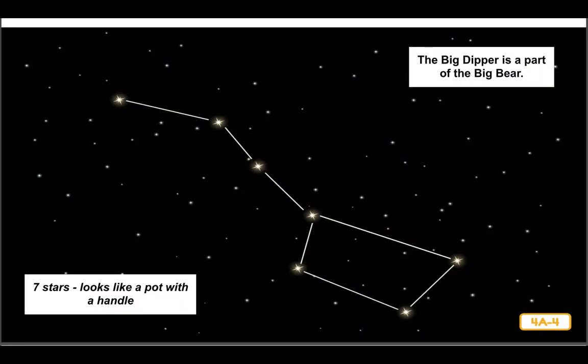One of the first groups of stars that young stargazers in the United States learn about is also the easiest one to spot. The Big Dipper looks like a giant soup ladle up in the sky.